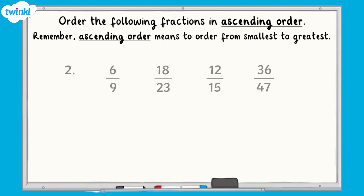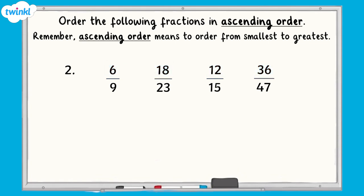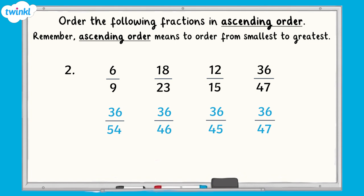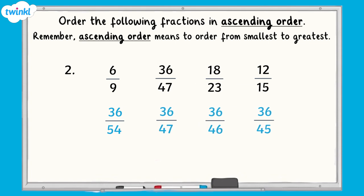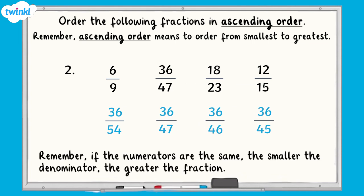For the second question, the numerators are not the same. A common multiple of six, twelve, eighteen, and thirty-six is thirty-six. So we need to find an equivalent fraction with a numerator of thirty-six. Now that they all have the same numerator, we can order them by looking at the denominators. Remember, if the numerators are the same, the smaller the denominator, the greater the fraction.